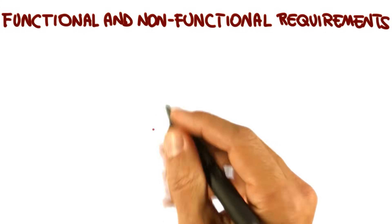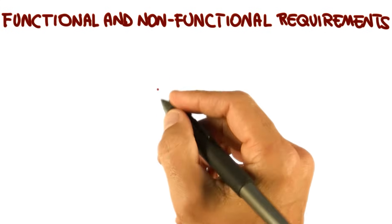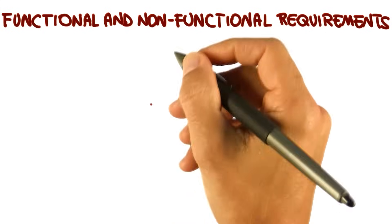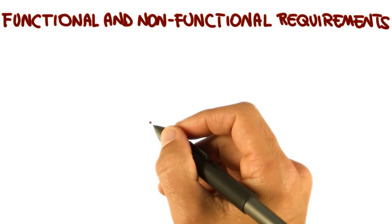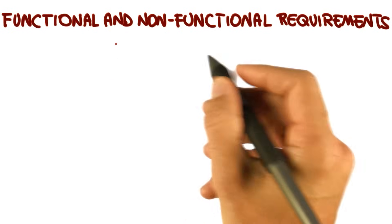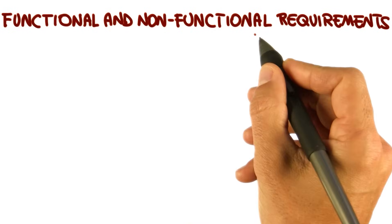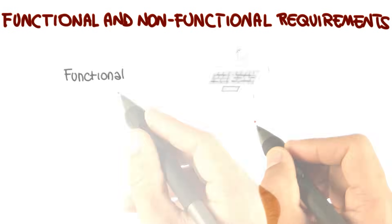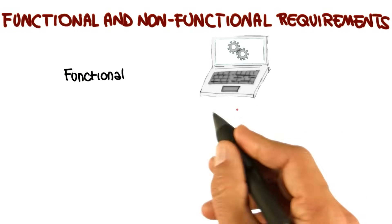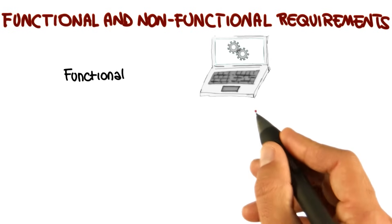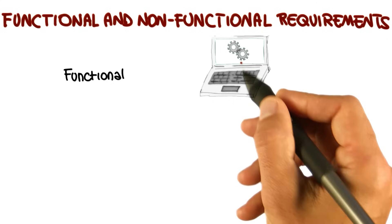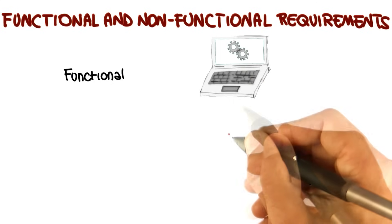Among the requirements that we can collect from the application domain, we need to distinguish between two main types — and you probably heard about these ones: functional requirements and non-functional requirements. Functional requirements have to do with the functionality of the system, with what the system does, with the computation.